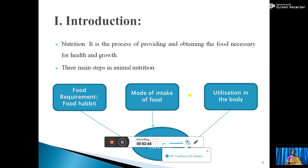First is the introduction. Children, you must know what is the meaning of nutrition. It is the process of providing and obtaining the food necessary for health and growth. Nutrition is very important for our health. The main steps of animal nutrition are: first, food requirement and food habit — what type of food is required for the special organism.